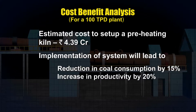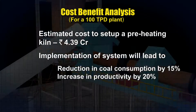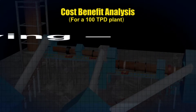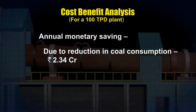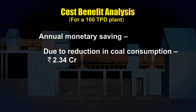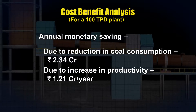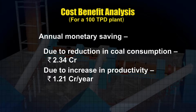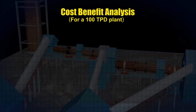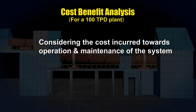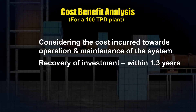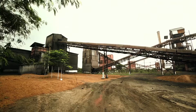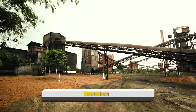The implementation of the system will lead to dual benefits: a reduction in specific coal consumption by 15% and an increase in productivity by 20%. The annual monetary saving due to reduction of coal consumption is rupees 2.34 crores, whereas the saving due to reduction of fixed cost through increased productivity is 1.21 crore rupees per year. Considering operation and maintenance costs, the investment can be recovered within a period of 1.3 years.